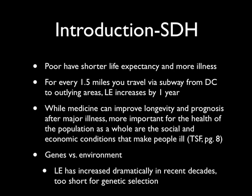In this introduction to social determinants of health — and you've read the article by Marmot and the Solid Facts Report — the gist is that poor people have shorter life expectancy and suffer more illness. Some really interesting data presented in the Solid Facts Report is that for every 1.5 miles you travel by subway from downtown Washington, D.C. into the outlying areas, your life expectancy increases by approximately one year.